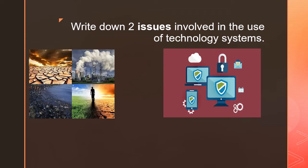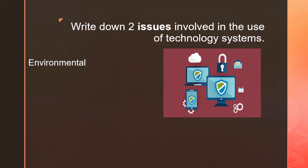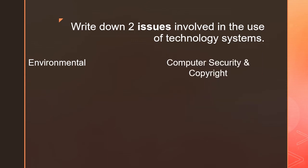For this next task, you want to write down two issues involved in the use of technology systems. You want to put them under these two headings: environmental, computer security, and copyright. Think about it — pause the video here and write it down in your books.